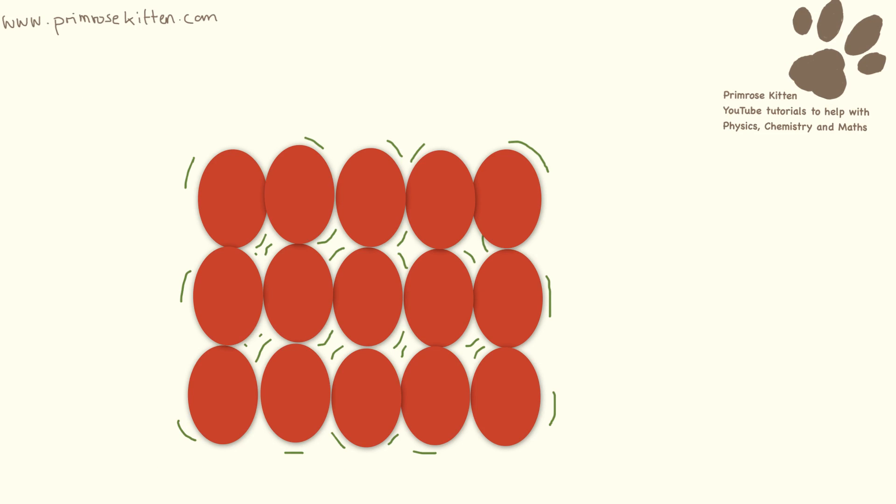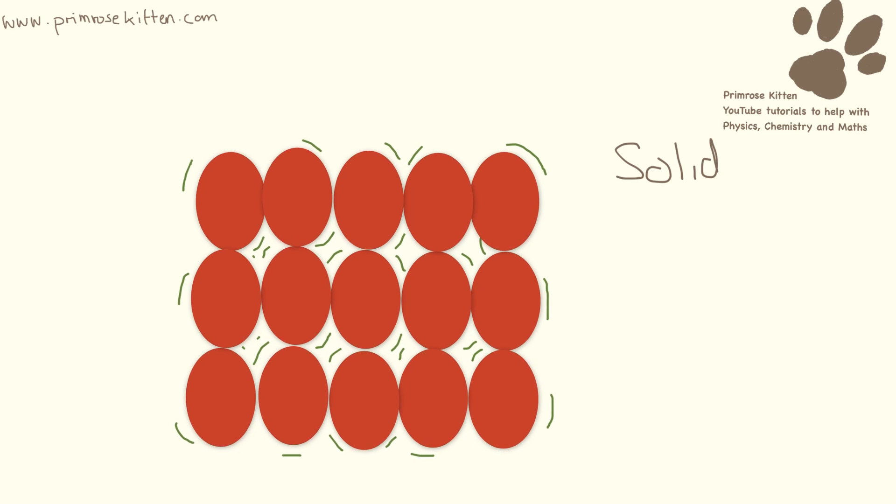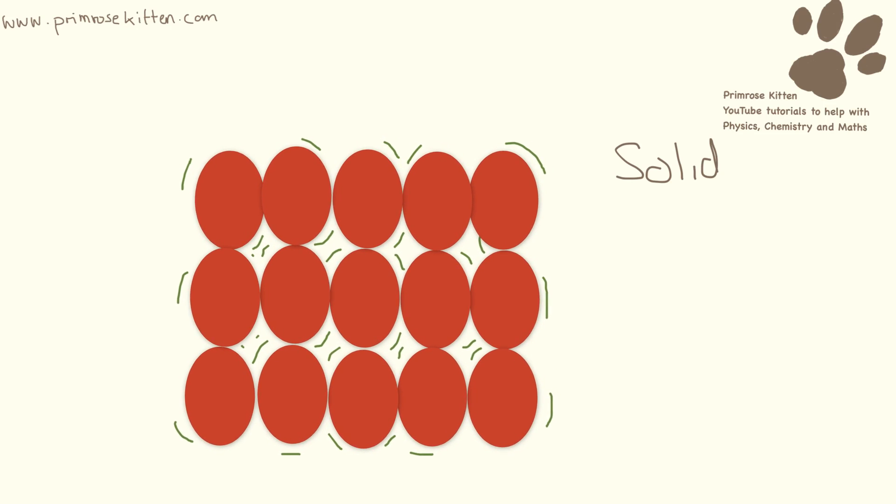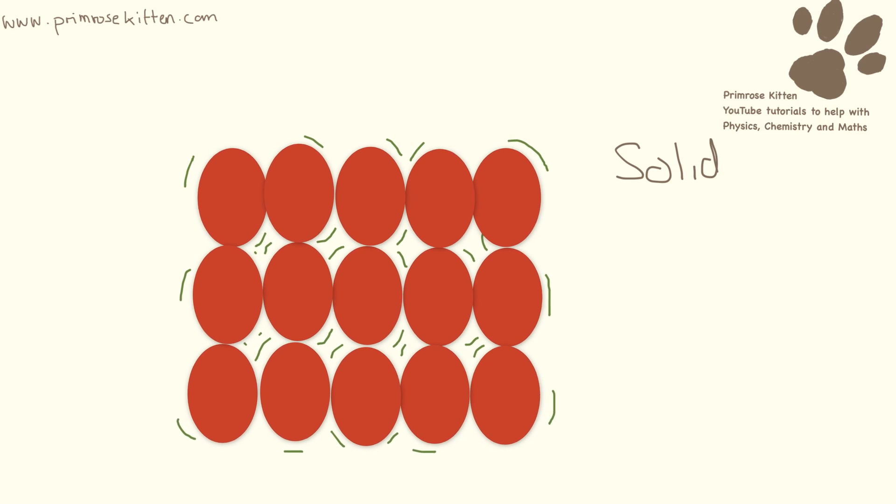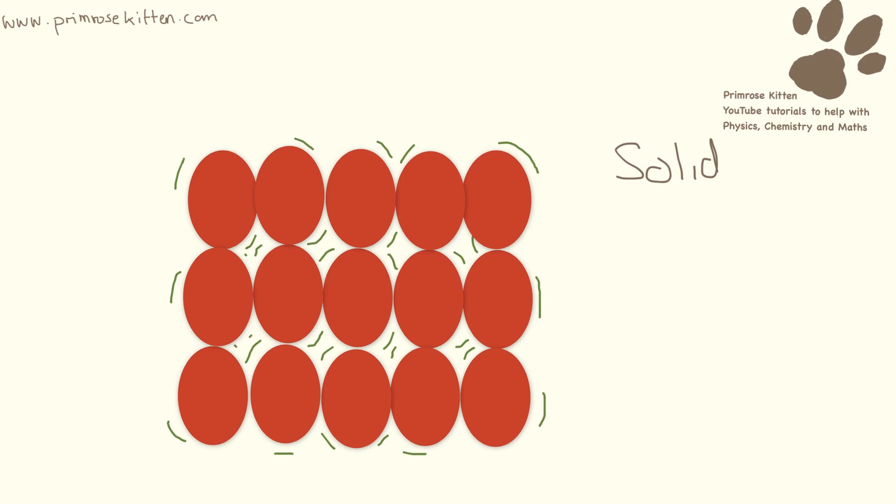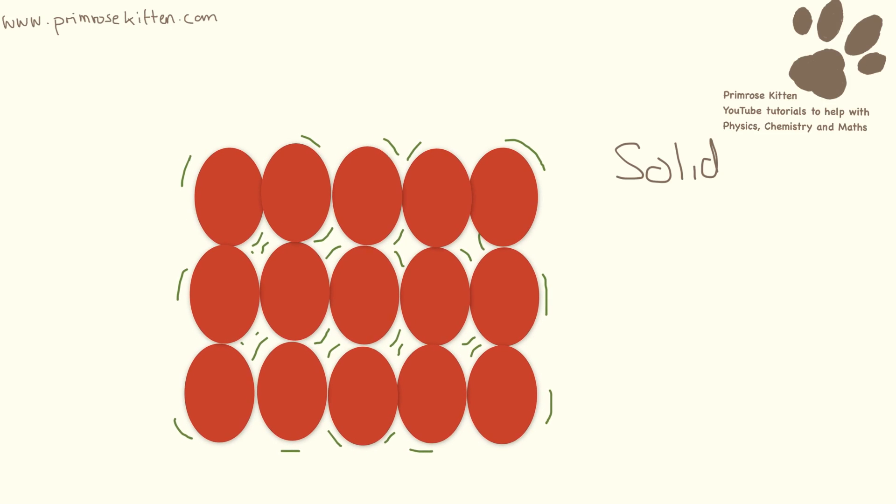Here we have a solid. We can recognize that because the particles are all very close together, they're all touching, and I've drawn the vibrations here with these tiny little green movements. Solids are very fixed in position. They may wiggle around a little bit, but they're not going to change their shape very much because they're very close together and can't really be squashed.